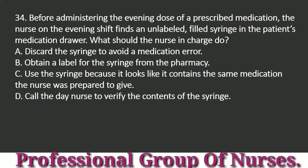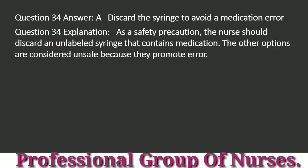Question 34: Before administering the evening dose of a prescribed medication, the nurse on the evening shift finds an unlabeled, filled syringe in the patient's medication drawer. What should the nurse in charge do? a. Discard the syringe to avoid a medication error. b. Obtain a label for the syringe from the pharmacy. c. Use the syringe because it looks like it contains the same medication the nurse was prepared to give. d. Call the day nurse to verify the contents of the syringe. Answer: a. Discard the syringe to avoid a medication error. Explanation: As a safety precaution, the nurse should discard an unlabeled syringe that contains medication. The other options are considered unsafe because they promote error.